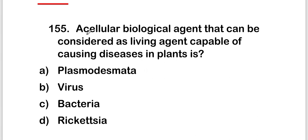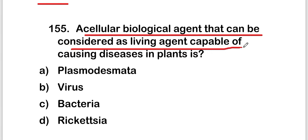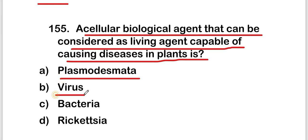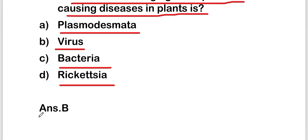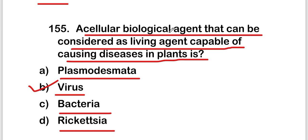The next question is: an acellular biological agent that can be considered a living agent capable of causing disease in plants is plasmodesmata, virus, bacteria, or rickettsia? The right answer is option B, that is viruses. The acellular biological agent capable of causing disease in plants is a virus.